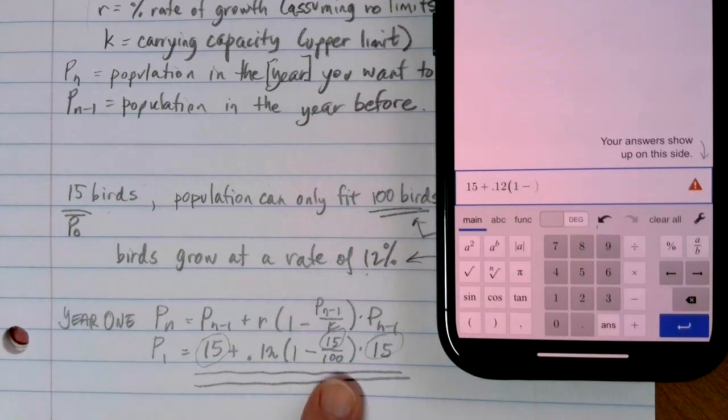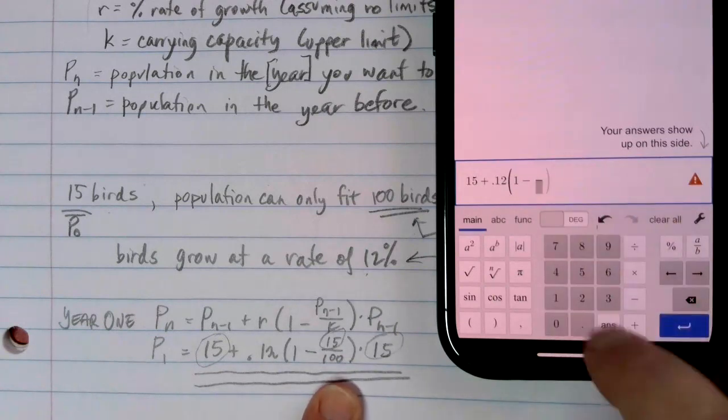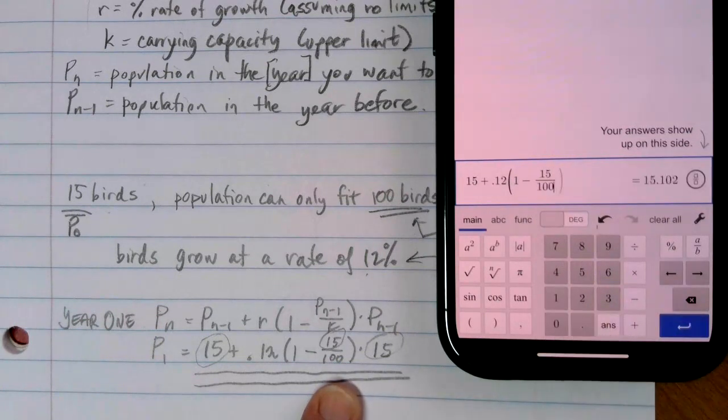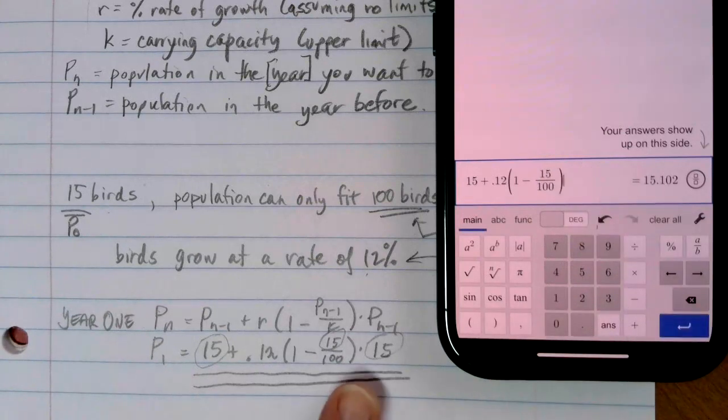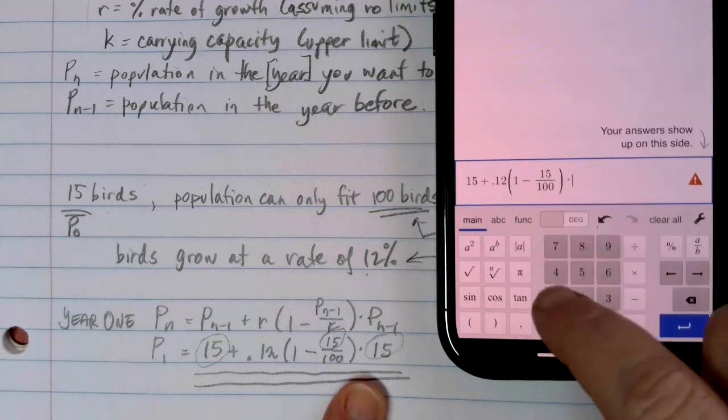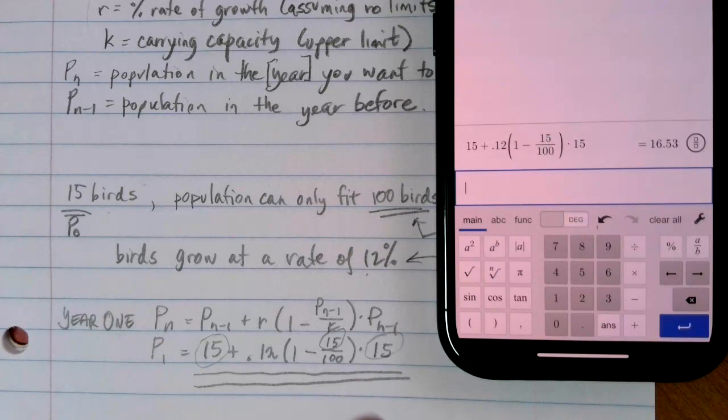Now we can either do 15 divided by 100 if we want, or we can use this fraction button over here, the A over B, and it gives us a spot above and below. So I want to do 15 on top, and then I want to move down to the bottom and put 100, my limiting factor on the bottom. Close your parentheses, and then I want to times that by 15. The times is going to put the little dot that we're looking for, and then my answer comes out right there, 16.53.